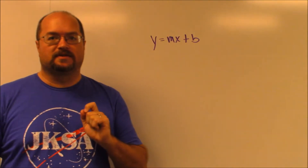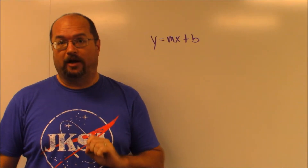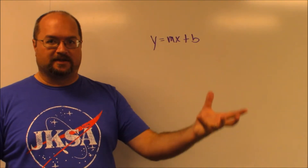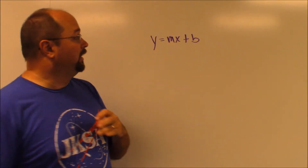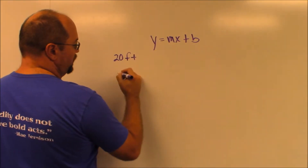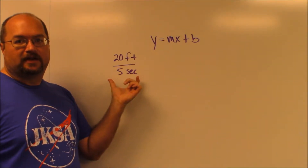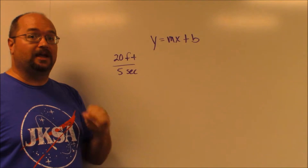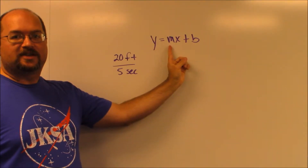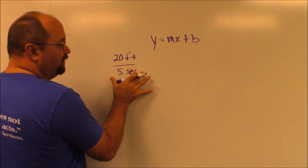This problem is a little bit interesting because we're not actually told specifically to create an equation, but if we do, it's going to tremendously help our ability to get the correct answer. We're given a situation where a balloon is rising in the air, and we're given a rate of 20 feet every five seconds. That's the rate of change — 20 feet every five seconds. And we're told that this rate is constant, that it will remain constant. So the first thing we want to look at is, in our equation, m is our rate of change, that's our slope. So we're going to substitute this 20 feet per five seconds in for m.